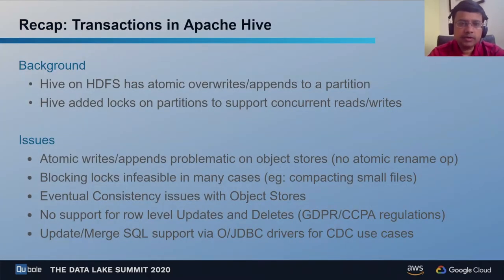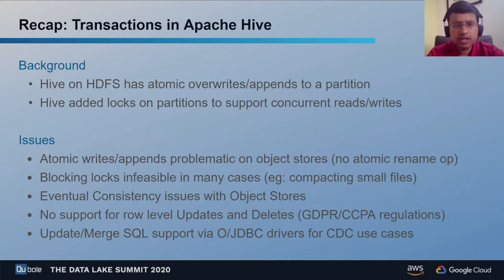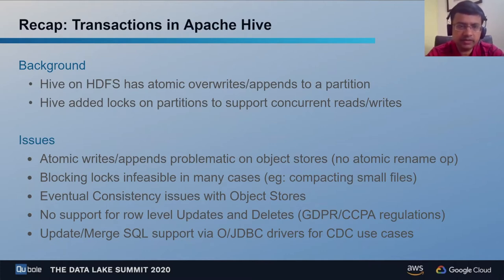Why do we need transactions, and what historical work has been done in this area? Hive has always supported atomic appends and overwrites to a partition in the old days of on-premise Hadoop and HDFS. To allow concurrent reads and writes, it also added locks on partitions so readers and writers don't clobber each other. However, object stores did not provide atomic rename operations like HDFS, making atomic writes problematic in the world of cloud computing.